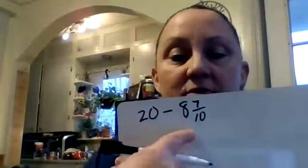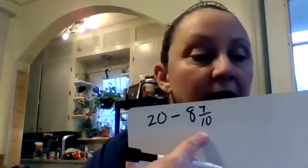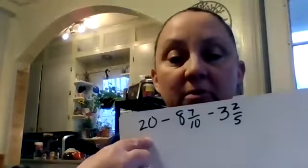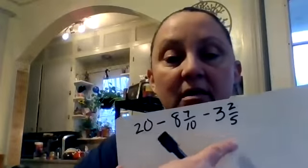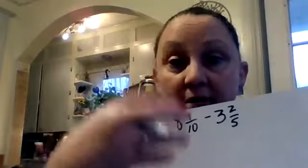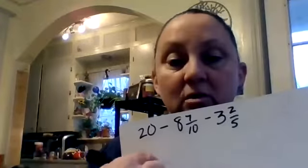Okay, so eight and seven tenths of a dollar, which you're taking out of your $20, and then he buys another gift that's three and two fifths. So he's taking from his $20 this much and then this much out. He's taking it out each time, right?